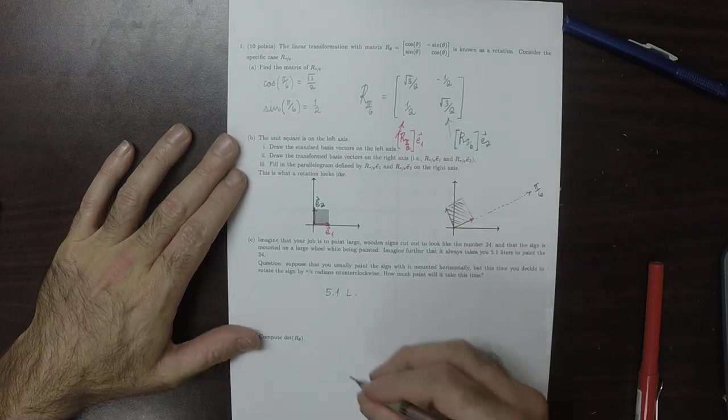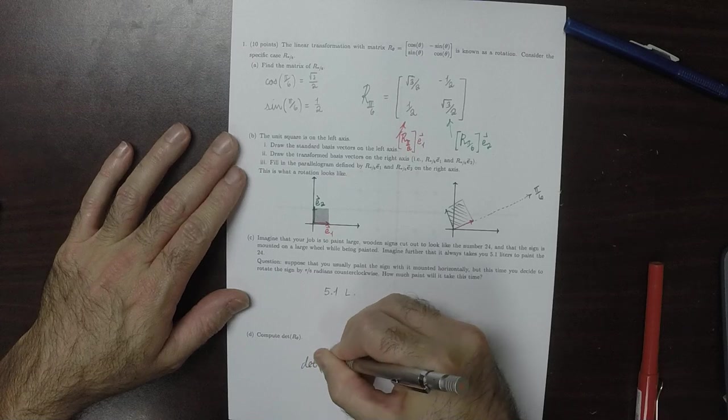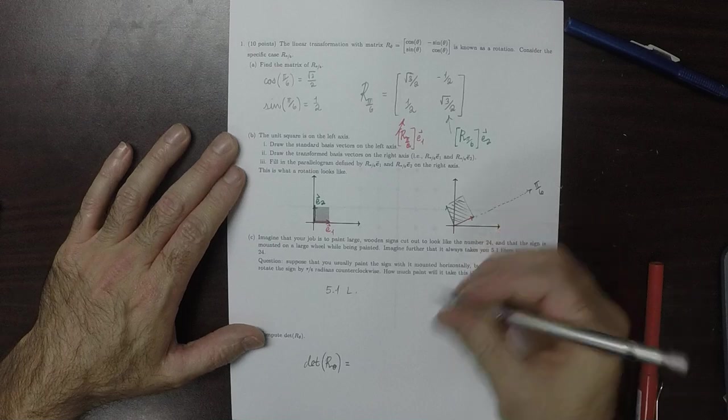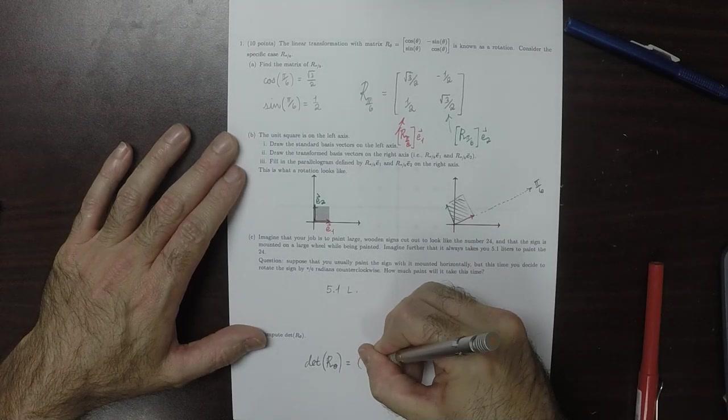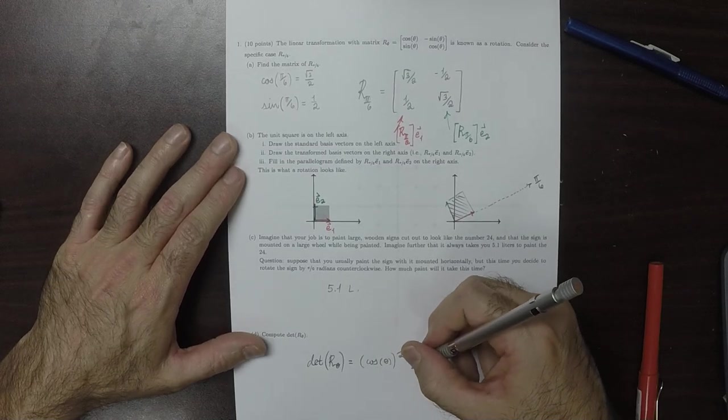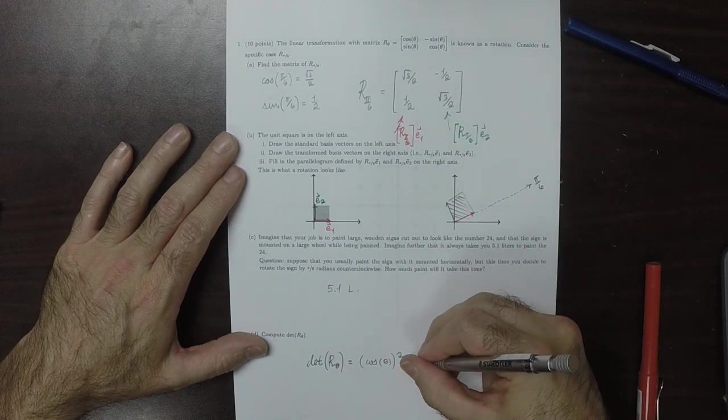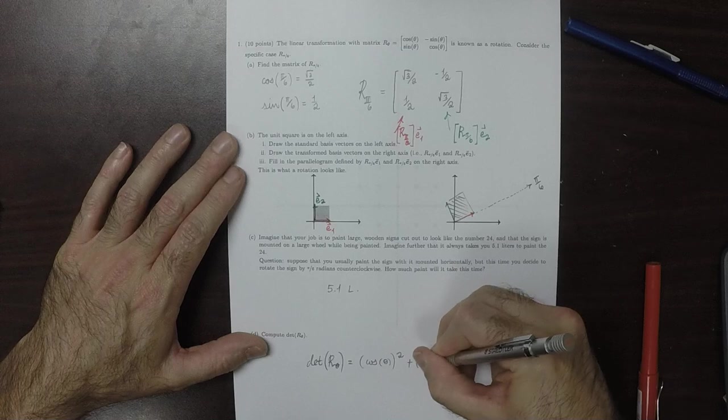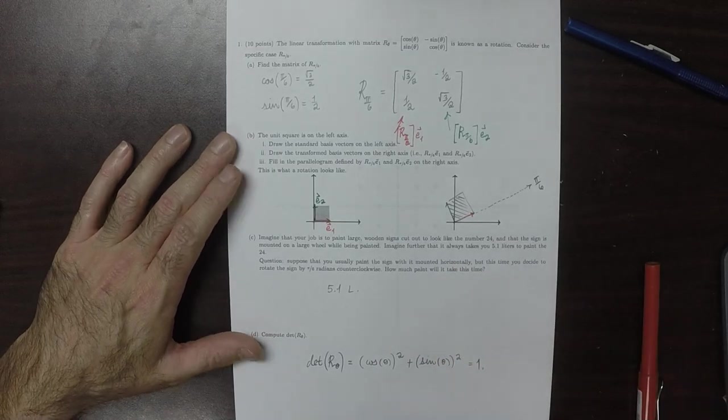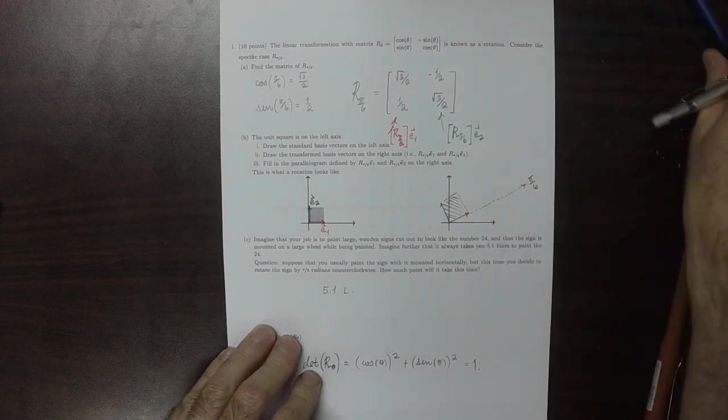And then the determinant of r theta, for any theta in fact, will be cosine of theta squared, and then because of the negatives, we'll get add sine of theta squared, which is of course 1. And that makes sense because rotations preserve area.